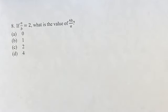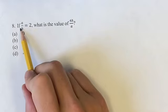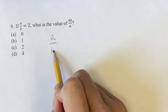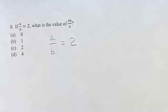Hello and welcome back to another video. In this problem we're given that a over b is equal to 2, and we're asked what is the value of 4b over a?